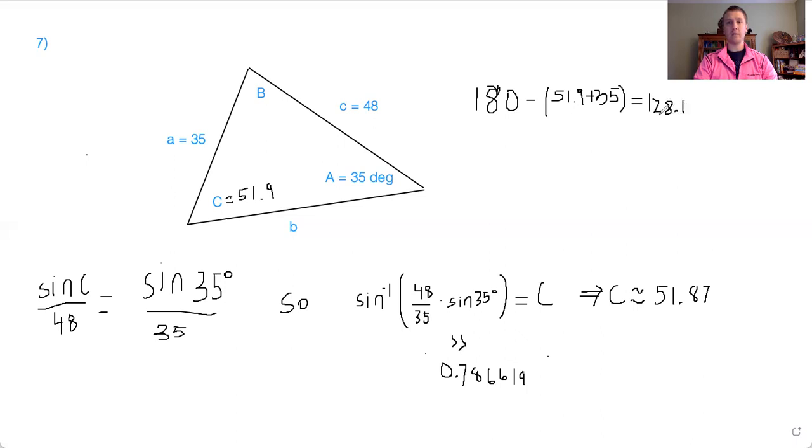So if we have this angle 51 degrees and this one 35, then angle B must be 128.1. Okay, that's entirely possible to have those three angles. We didn't get a negative angle measure for this angle B, so that's entirely possible.